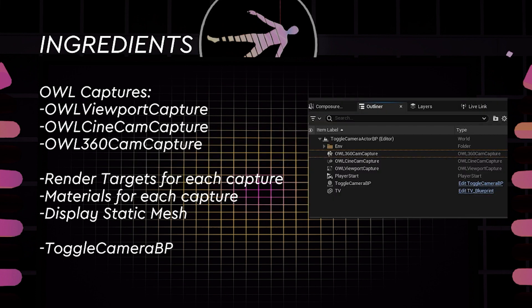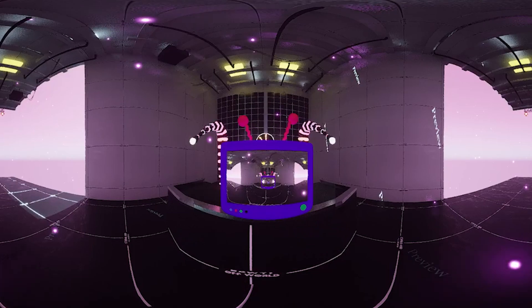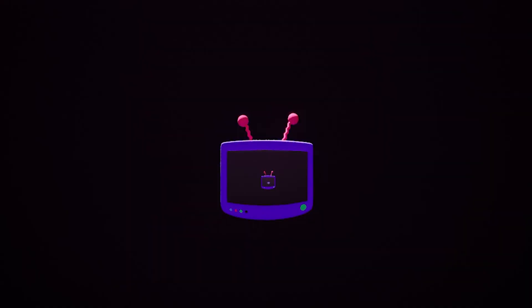So first, we're looking at the different ingredients we will need to create today's demo. We have four main ingredients: the viewport capture, the off-world live CineCam capture, and a 360 cam capture. Each cam capture system will require its own render target and its respective material. We will also need a static mesh as a placeholder to preview our render targets, and finally the toggle camera blueprint, allowing us to toggle between these systems and display it on the static mesh. You'll be able to recreate this quickly by cloning our blueprint from Pastebin or dragging and dropping the asset into your scene.